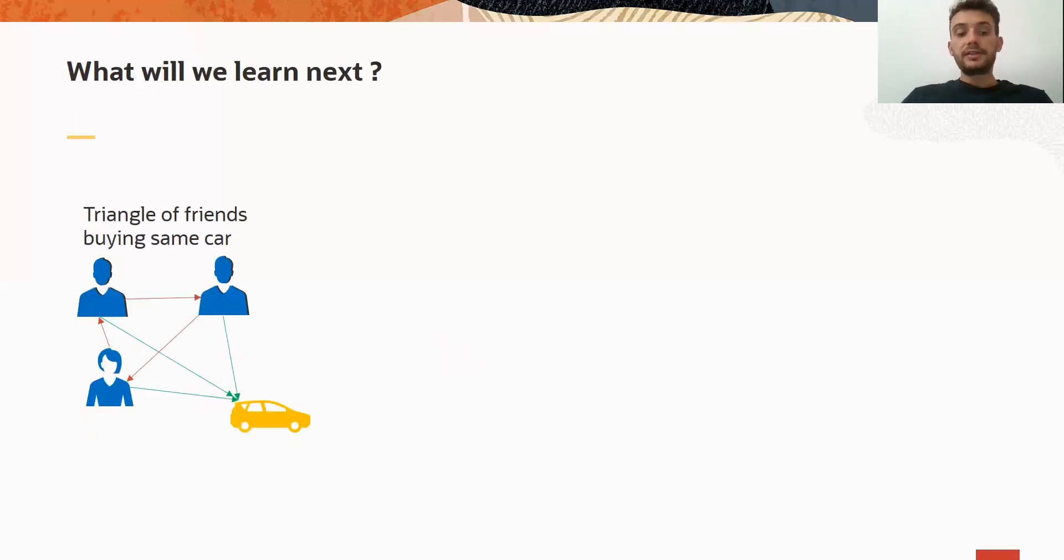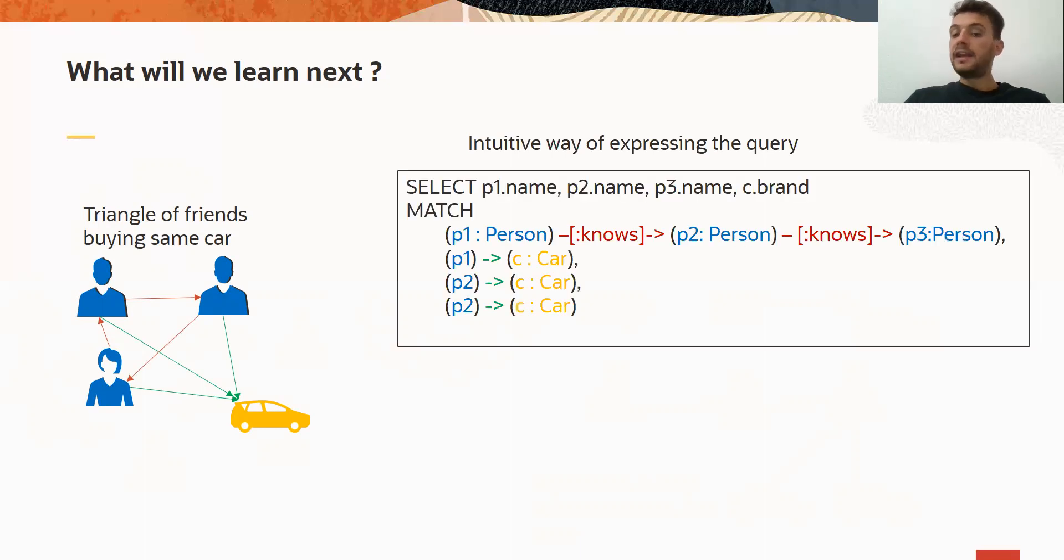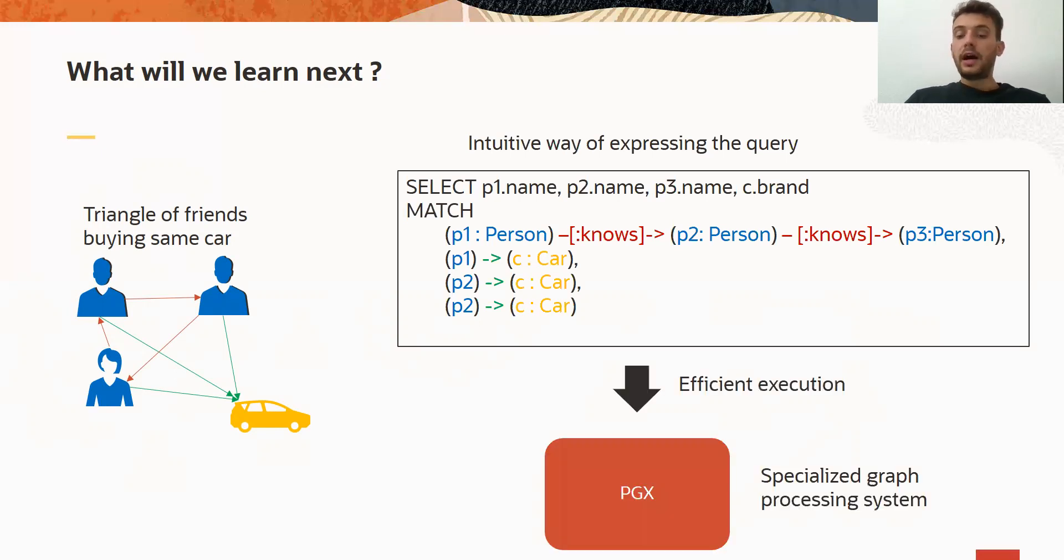In our next tutorials, we will learn how we can map these shapes—triangle of friends buying the same car—into a high-level language, similar to SQL, called PGQL, and then how we can execute these queries efficiently on top of our specialized graph processing system called PGX. So thank you all for listening, and I hope to see you all in our next tutorials. Thank you.